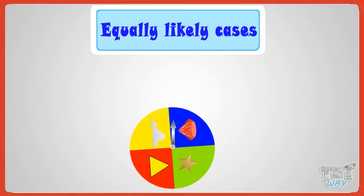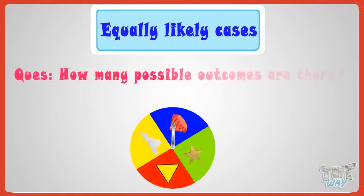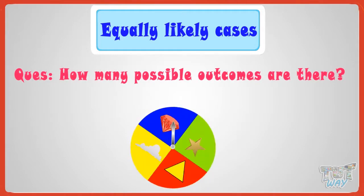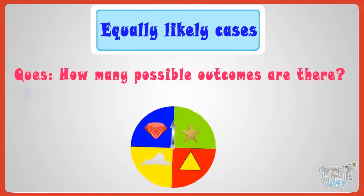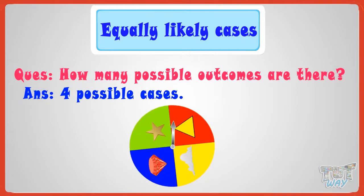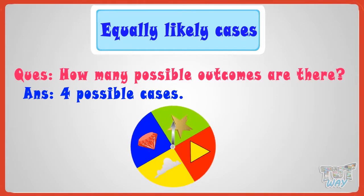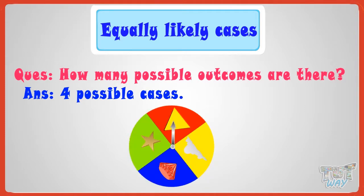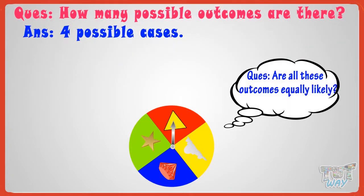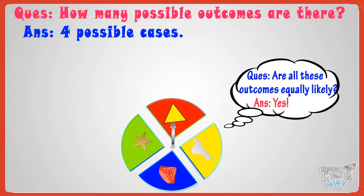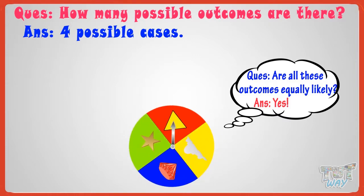How many possible outcomes or cases are there? There are four possible cases. The spinner may stop at diamond, star, cloud, or triangle. No other option is there. And are all these outcomes equally likely? Yes, these outcomes are equally likely, as all options are occupying the same space on the wheel.